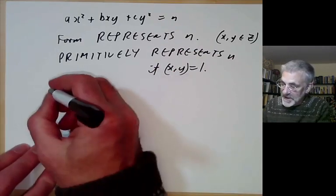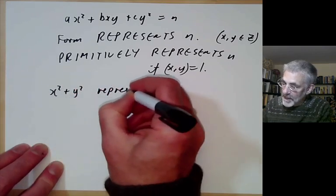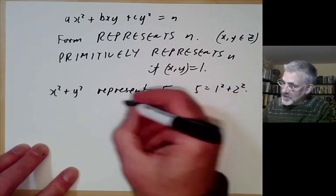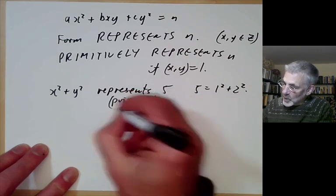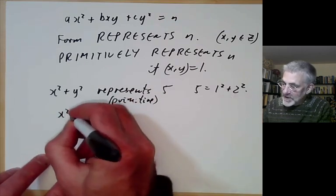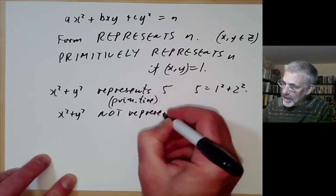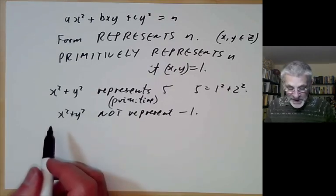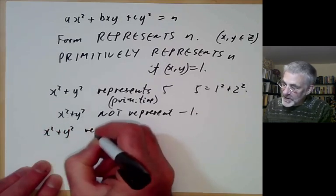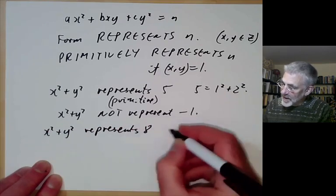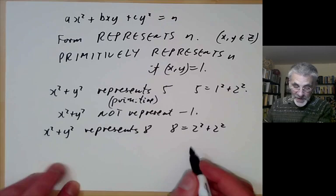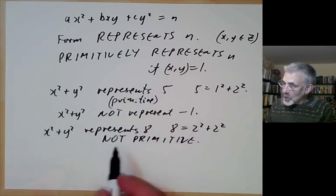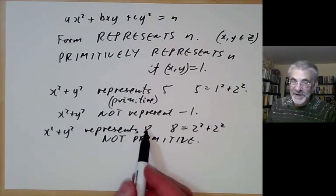For example, x squared plus y squared represents 5, because 5 equals 1 squared plus 2 squared, and this is primitive since 1 and 2 are co-prime. But x squared plus y squared does not represent minus 1, since the form is always positive. It also represents 8, because 8 equals 2 squared plus 2 squared, but this representation is not primitive.